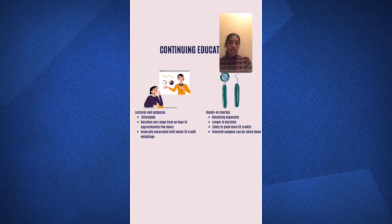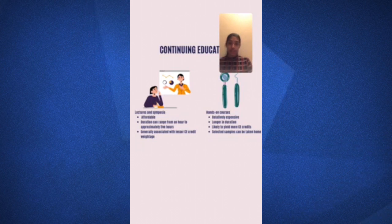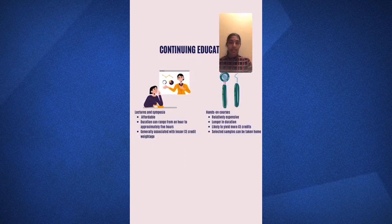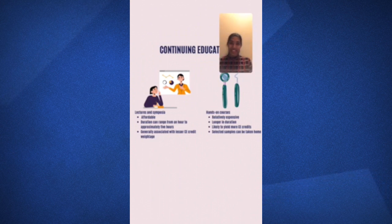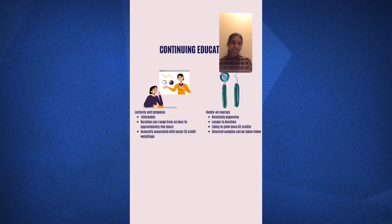Lectures and symposia may be associated with fewer CE points, and the number of hours you attend generally equals the number of CE credits you receive. Hands-on courses are definitely a step higher, and you pay a higher fee to register. The cheapest lecture I came across was around $20, while the cheapest hands-on course started at around $250.